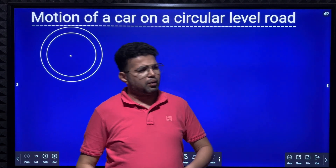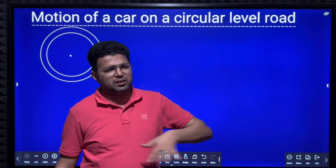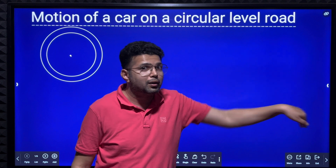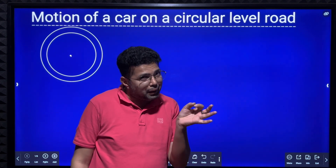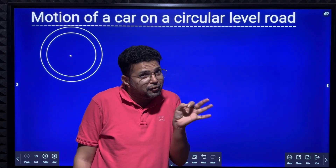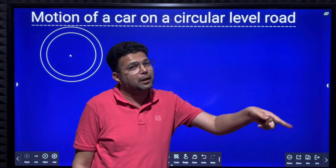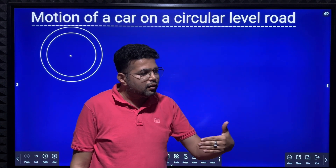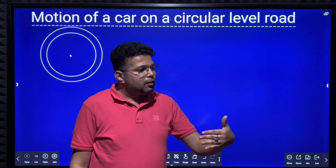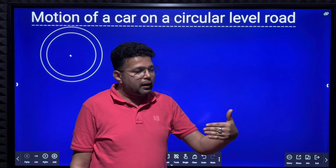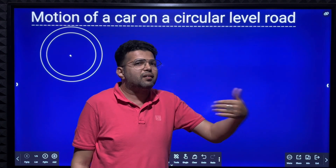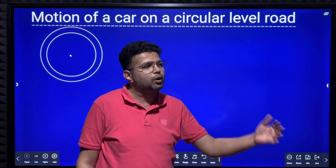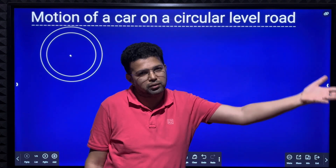You might have observed: if you are moving very fast on a bicycle, suddenly you cannot take a turn. There is a maximum safe speed with which you can take a turn. If you take a turn with a velocity higher than that, there is a possibility that the cycle will skid or you will be thrown out.